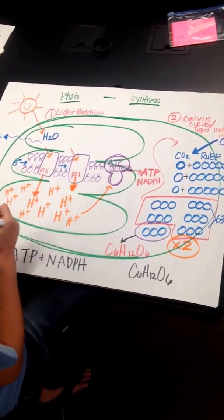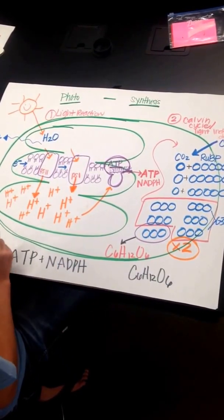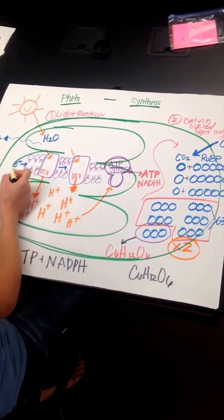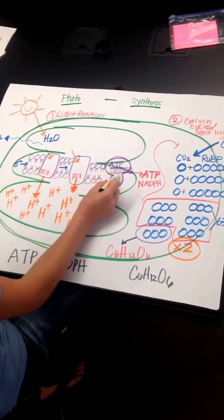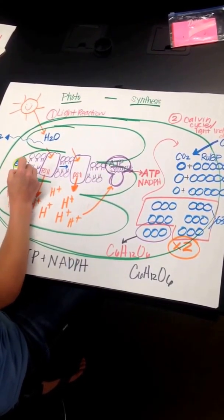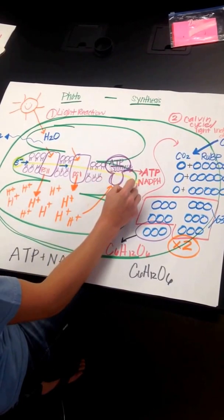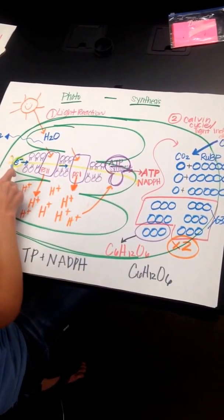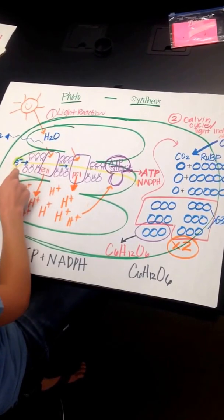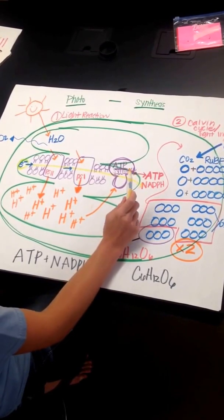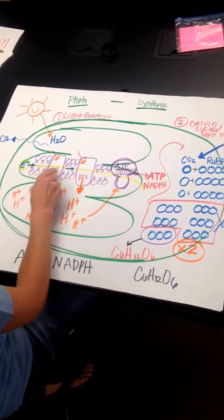One more thing I want to say about the light reaction here. There's two kinds. There's cyclic and non-cyclic. So what I've shown you here is the non-cyclic photosynthesis. The electrons start right here, and they go through and bind to NADPH. So they don't make a circle. These electrons go from the beginning from water, and they bind to NADPH, which is the final electron acceptor. So that's non-cyclic, is the yellow line.